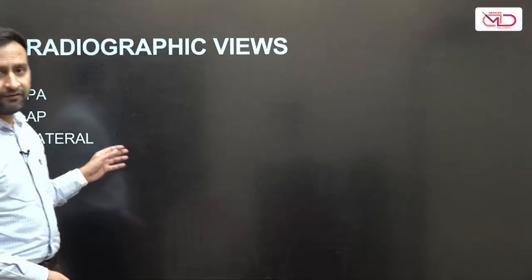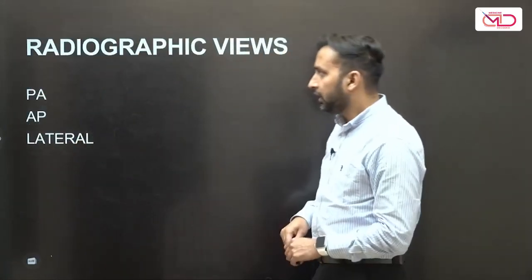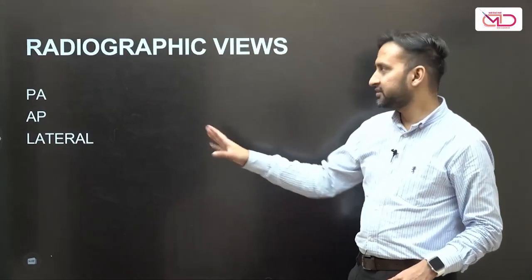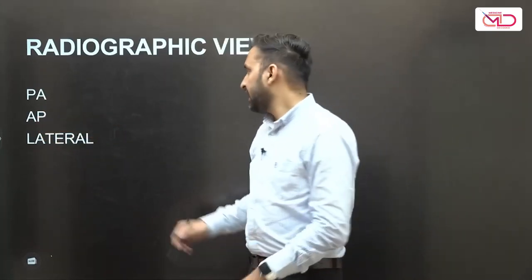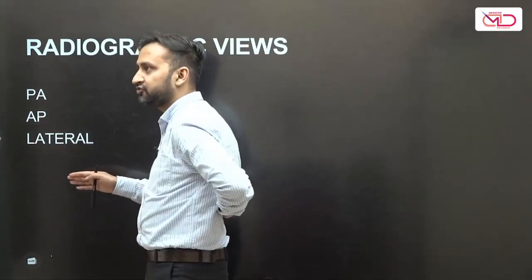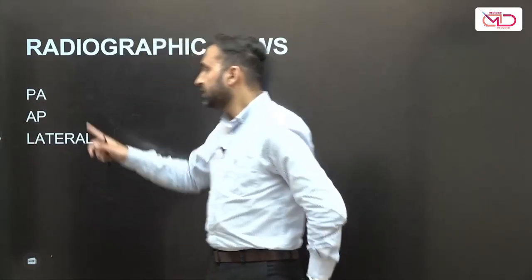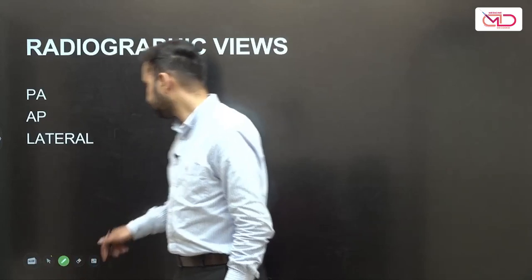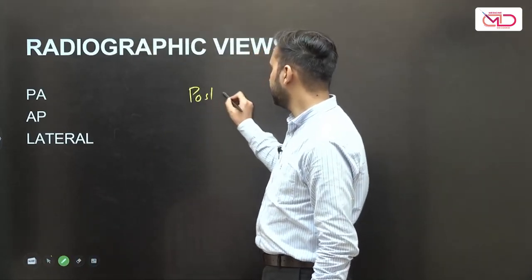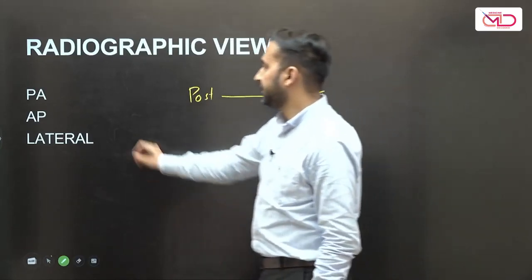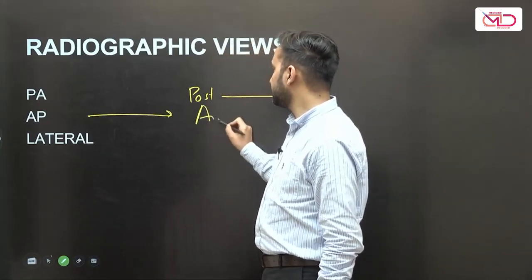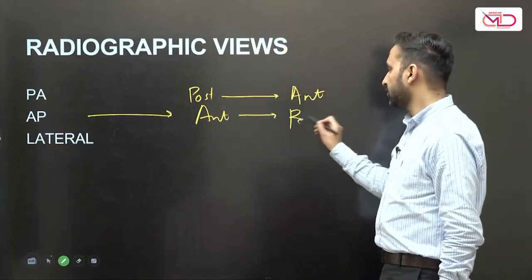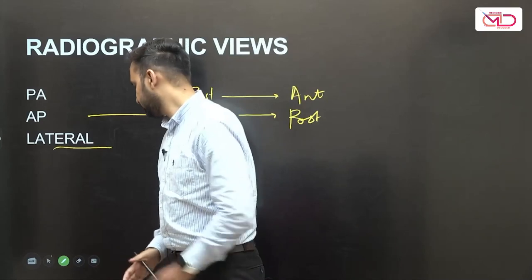Now coming to our principal topic — the radiographic views. We have a conventional PA view, an AP view, and a lateral view. PA stands for postero-anterior view — the direction of X-rays goes from the posterior to the anterior part of the body. In an AP view, the direction is from anterior to posterior. The lateral view we will discuss later.